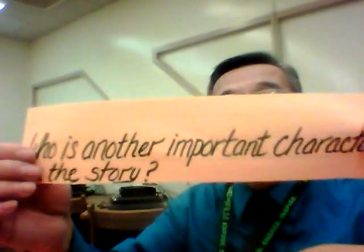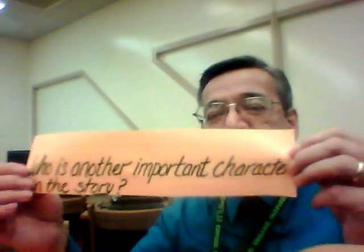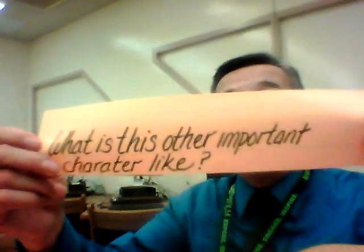We get to know him inside particularly when he does his soliloquies, where he talks to the audience — kind of like what I'm doing now — which is kind of like between the audience and the main character, and the other characters in the story have no idea what's going on. Also, who is another important character in the story, what are they like, how do they interact with the main character, and what do they bring to the story?